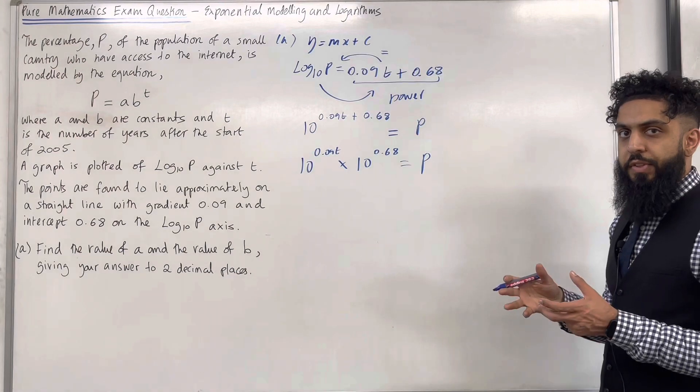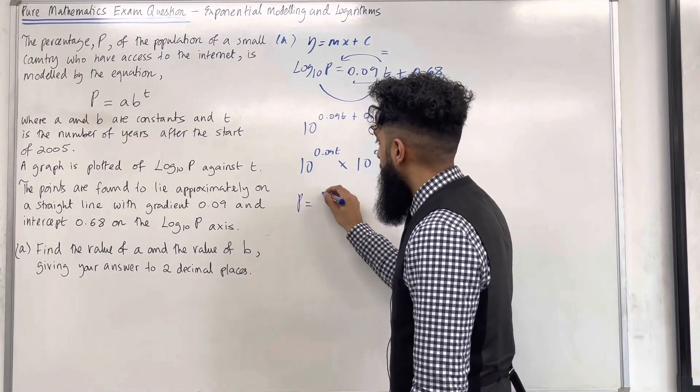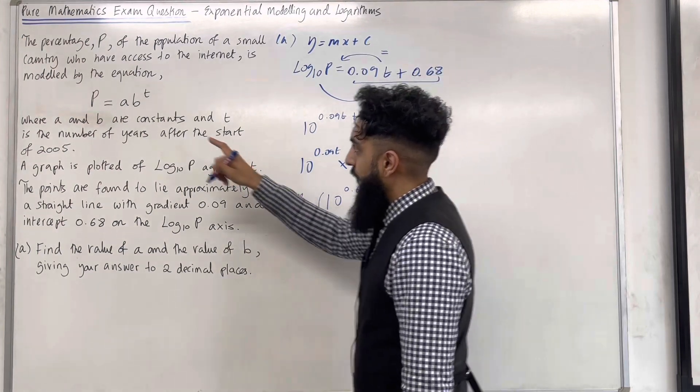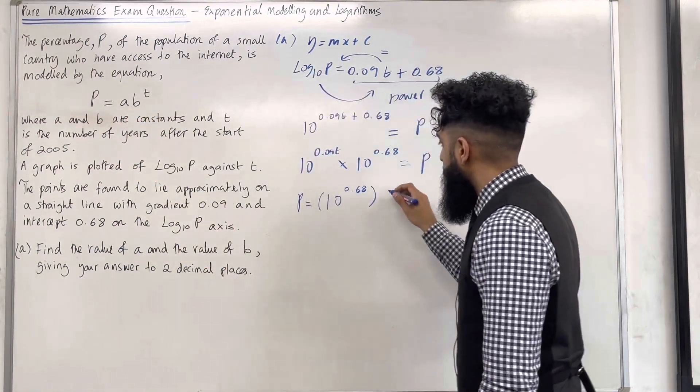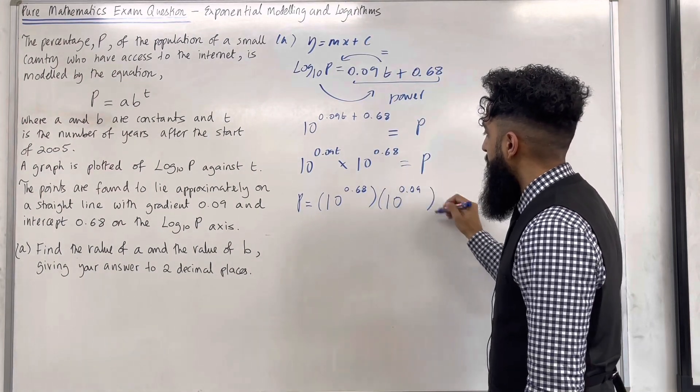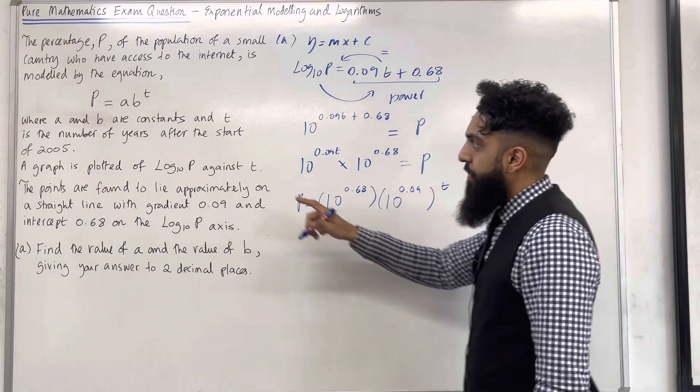I can rearrange this and write the following. I've got P equal 10 to the power 0.68, so that there's my A, multiplied by 10 to the power 0.09 and power T on the outside. So that there's my B.